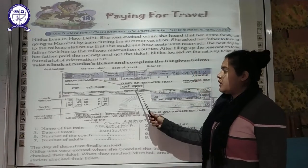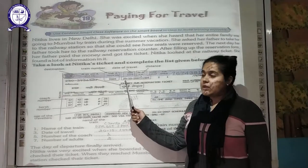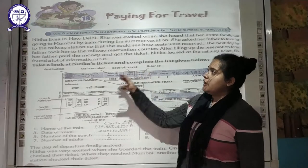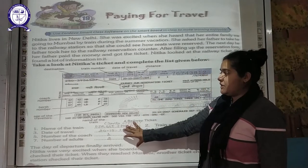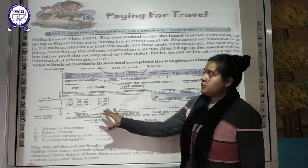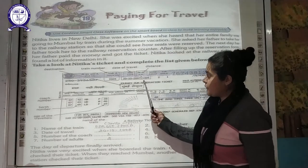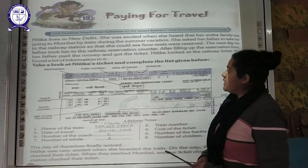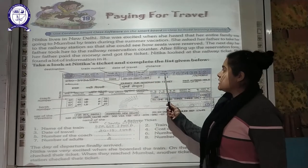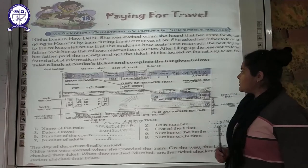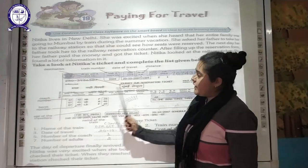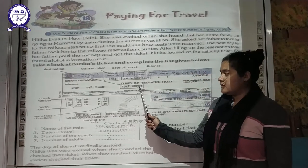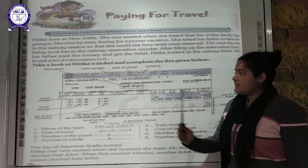The date of travel — when they have to move — is 20/10/2007. The distance covered by the train from New Delhi to Mumbai is 1384 kilometres. Then, how many adults are travelling and one child. The journey starts from New Delhi and the destination is Mumbai Central.